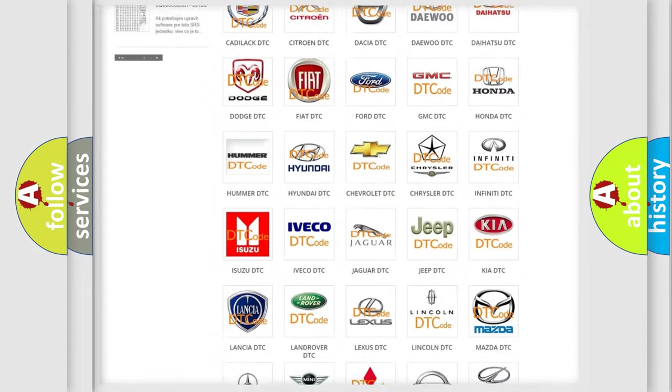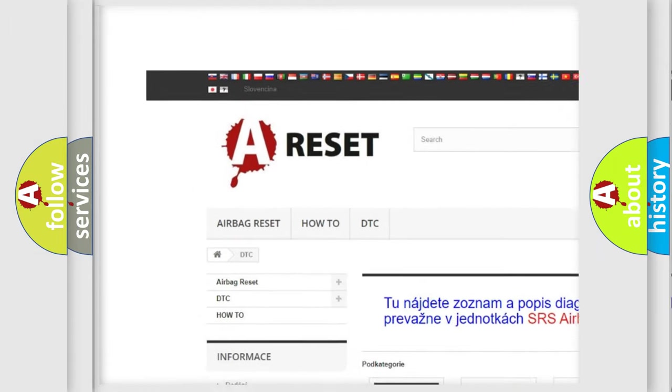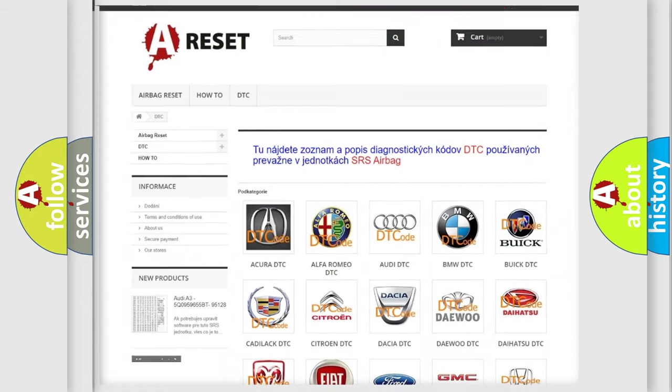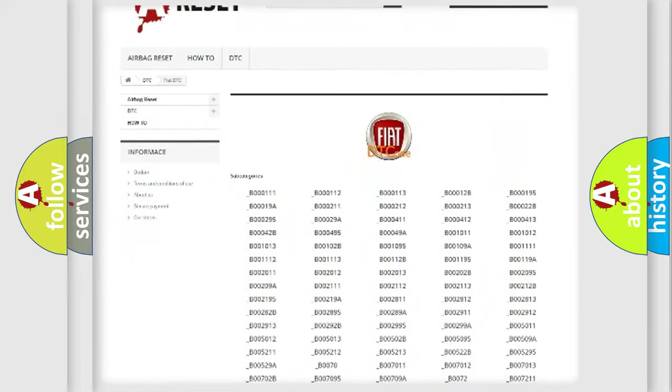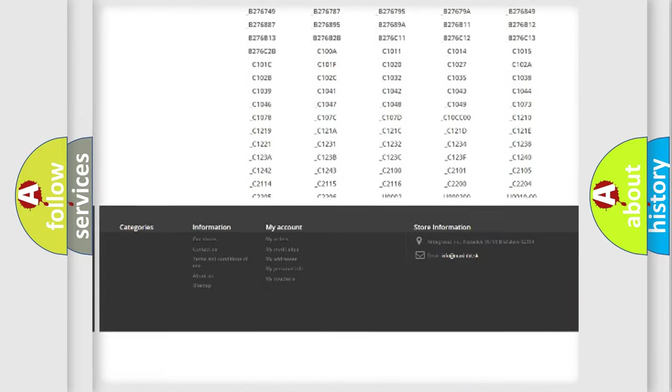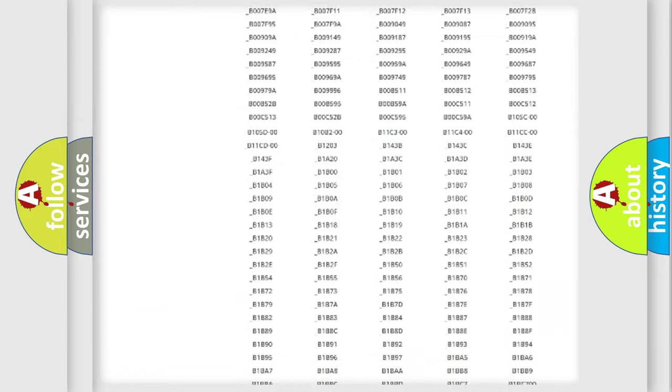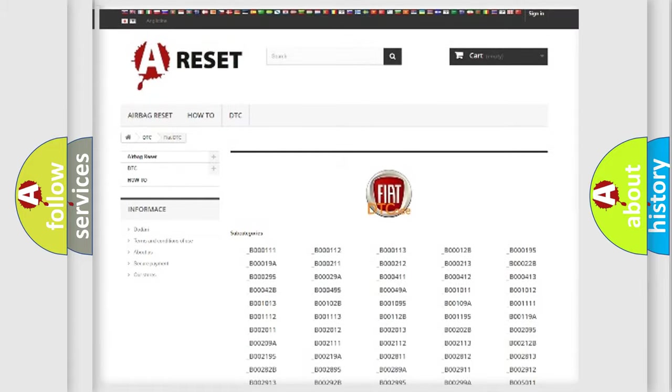Our website airbagreset.sk produces useful videos for you. You do not have to go through the OBD2 protocol anymore to know how to troubleshoot any car breakdown. You will find all the diagnostic codes that can be diagnosed in Fiat vehicles. Also many other useful things.